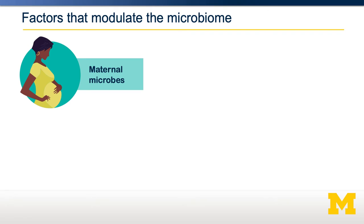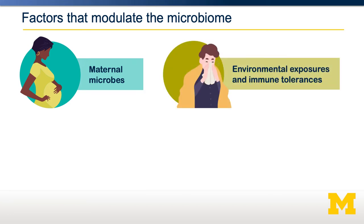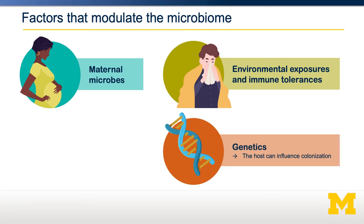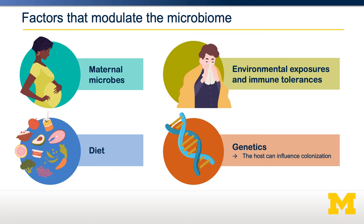There are several factors that modulate what bacteria exist within our microbiome. For infants, maternal microbes provide a large number of the initial colonizing species. Our specific environmental exposures and immune tolerances can affect the gut microbiome. Genetics can play a big role — people with similar genetics tend to have more similar microbiota. And of course, diet plays a very important role in modulating our microbiome. In fact, it's much easier to modulate our microbiome through diet than through genetics, which is generally not alterable.